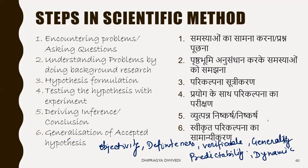The first characteristic is objectivity — it must be free from biases, prejudice, and subjectivity. The second characteristic is definiteness — it must not be vague; it must be clear, accurate, and exact; it must be planned, systematic, and accurate. The third is verifiability — it must be verifiable and testable by different means, using observation, tests, or experiments.